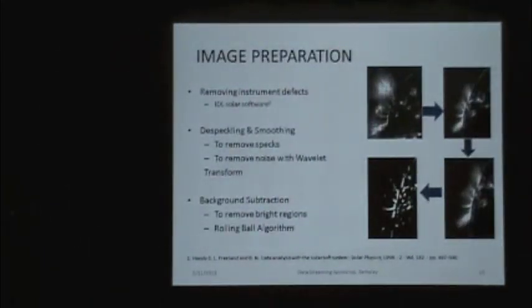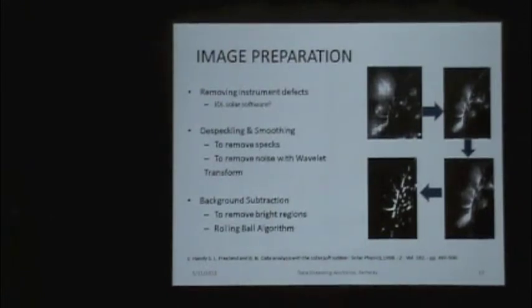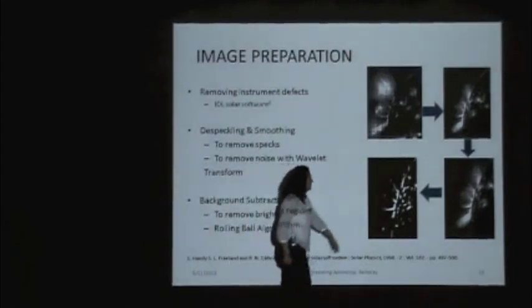First thing, the images were very problematic. We are applying some SolarSoft software to remove some instrument defects. Maybe you can see some grids in the image. We are getting rid of those grids and also some noise with the ideal solar software. After that, we apply despeckling and smoothing to remove specks and apply the wavelet transform to get a much smoother image. Then in the last phase, we do background subtraction to bring out coronal loops from the brighter regions. Then we are working with those final images. See, coronal loops are clear.